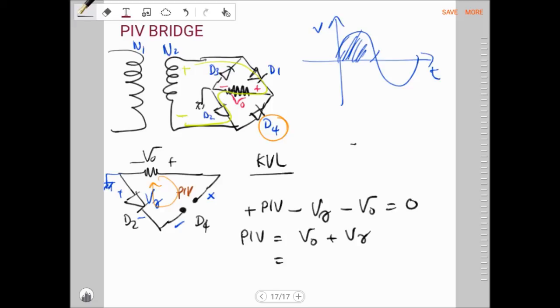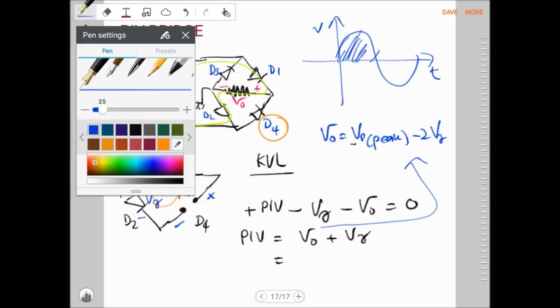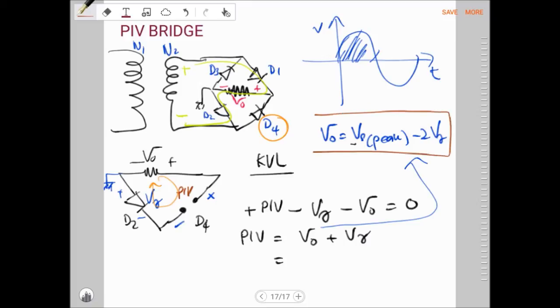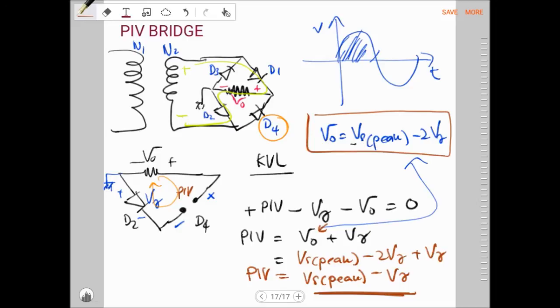From our previous class, the output voltage for a bridge is V_out equals V_s peak minus 2V_gamma. We derived this in class. Now we substitute: V_out will be V_s peak minus 2V_gamma plus V_gamma. So the peak inverse voltage will be V_s peak minus V_gamma. That's the final answer.